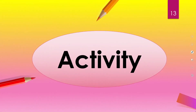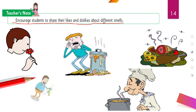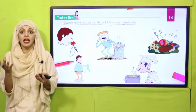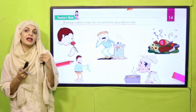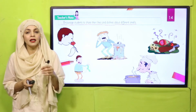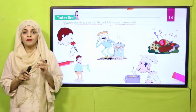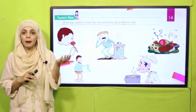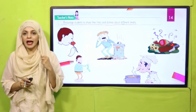Now let's move forward to an activity. The activity is to encourage students to share their likes and dislikes about different smells. Let me discuss my favorites - I like perfumes, rose smell, and the aroma of biryani when my mother is cooking. The smells I don't like are rotten food and garbage. Now tell me your likes and dislikes about smells.